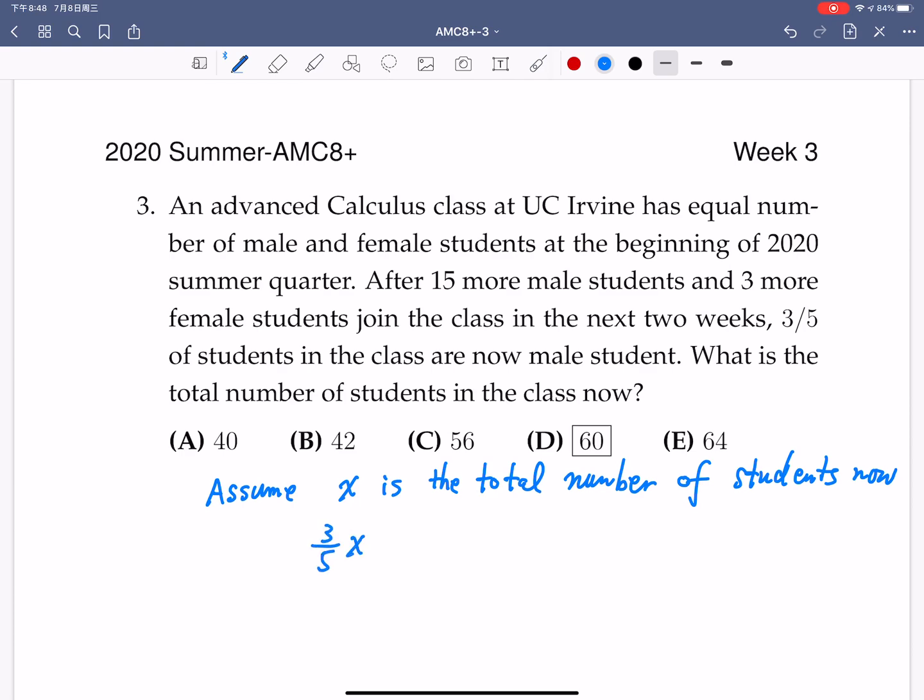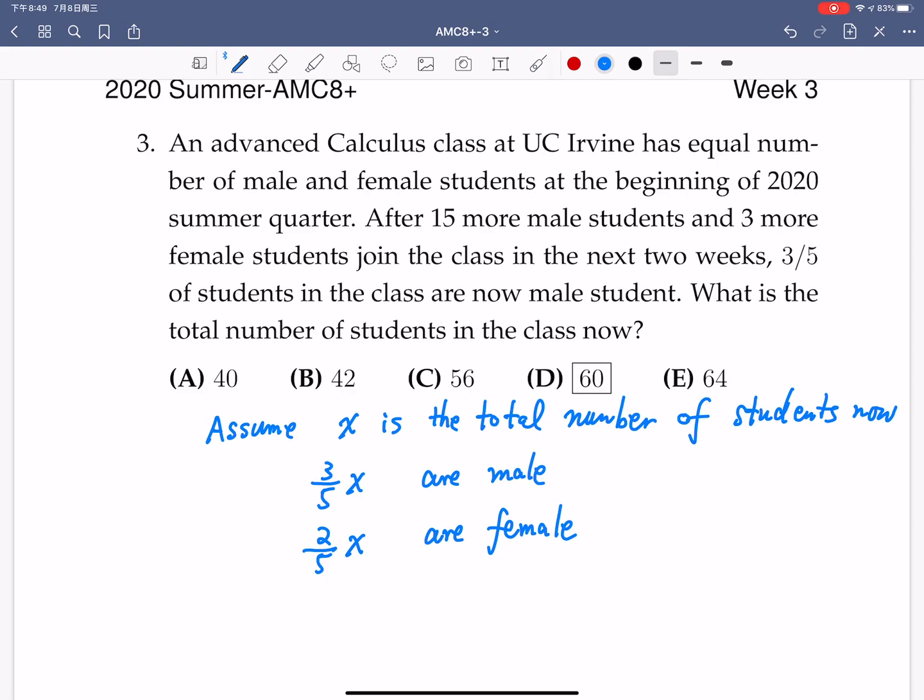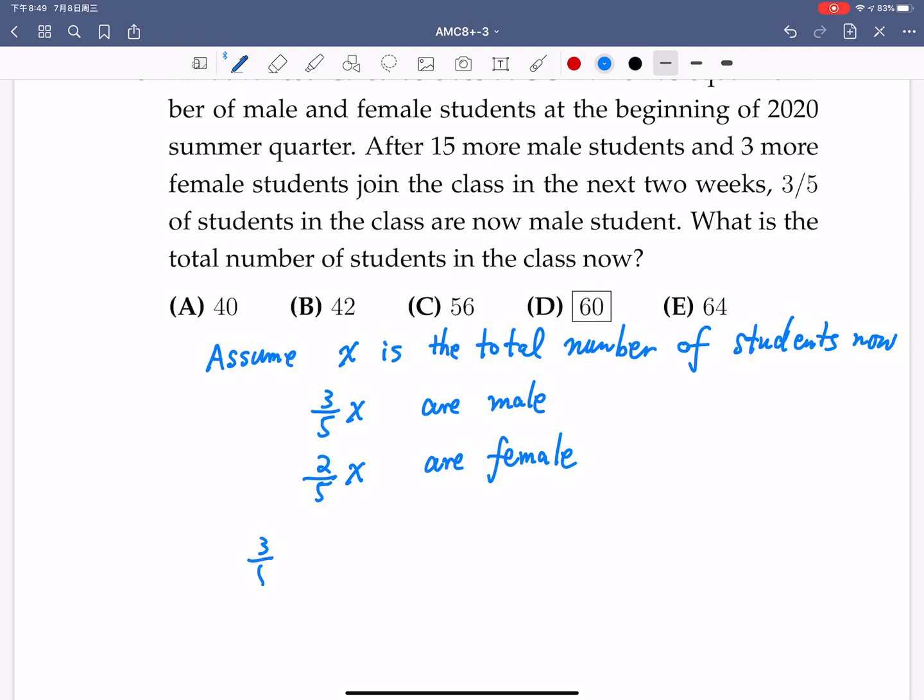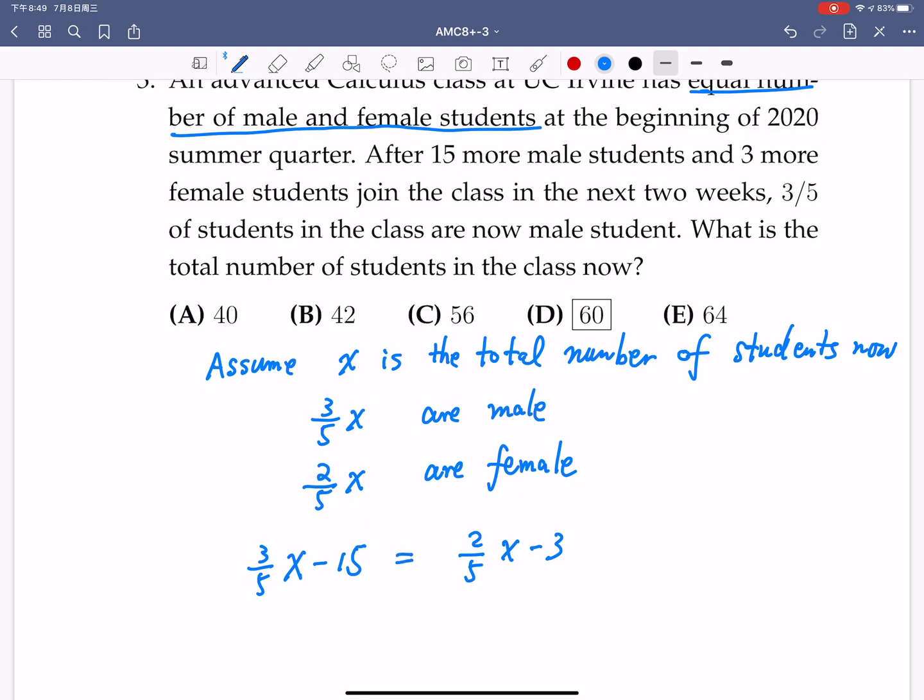So by the assumption, three-fifths x are male, and of course, two-fifths x of them are female. So this three-fifths x minus 15 was the number of male students at the beginning of the quarter. And the two-fifths x minus 3 was the number of female students at the beginning of the quarter. So by the assumption, at the beginning of the quarter, there are equal number of male and female students.